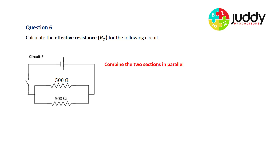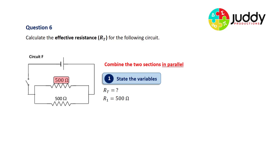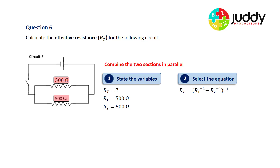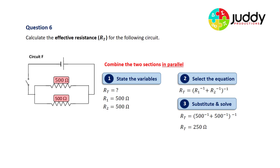Now we clearly have two sections in parallel. Stating our variables: the first branch has a resistance of 500 ohms and the second branch has a resistance of 500 ohms. Selecting the parallel equation and substituting 500 and 500, we end up with a total or effective resistance of 250 ohms. The effective resistance for circuit F is 250 ohms.